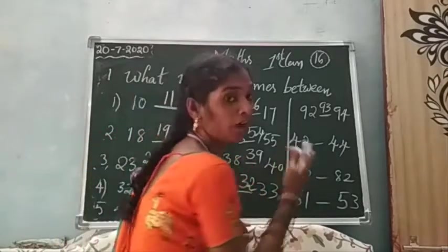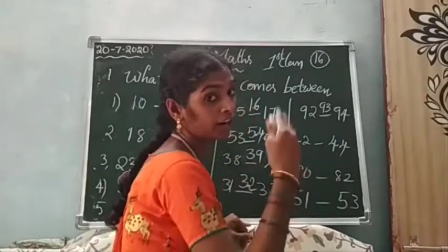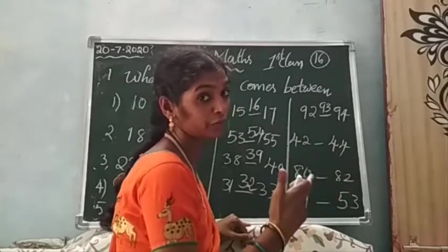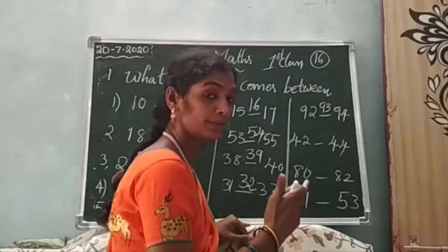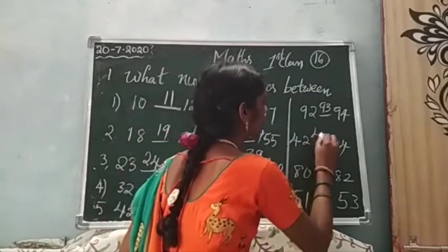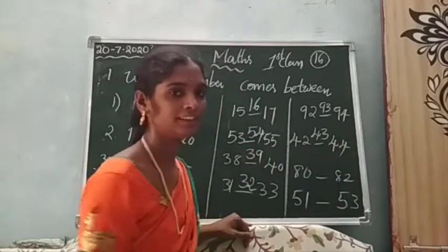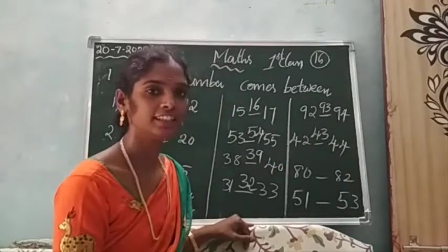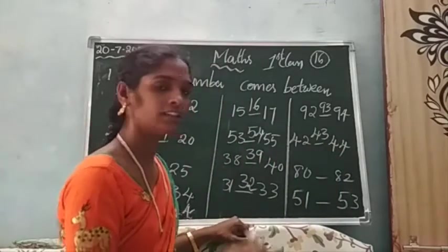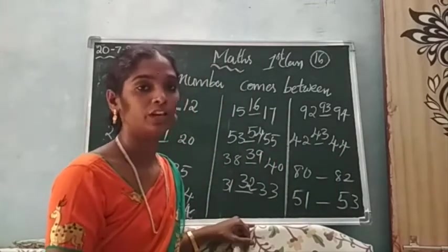42 after number? And 44 before the number? Please tell me. 43. And 80 dash 82.